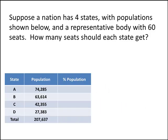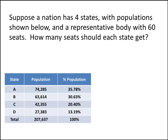Let's do that. If we take state A, which has population 74,285, and divide that by the total population, 207,637, we get .3578, which when expressed as a percentage is 35.78%. Do this for all the states and we get percentages for each one. As a check, we should make sure they add up to 100%. If you get 99.9 or 100.1, that's just rounding error, so make sure you're copying the numbers off your calculator correctly and don't worry about the rounding error.